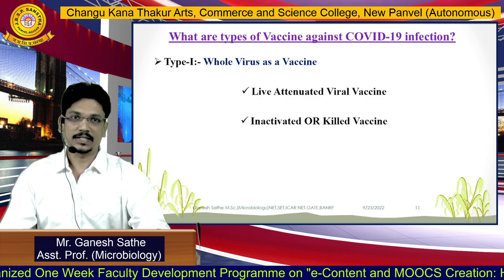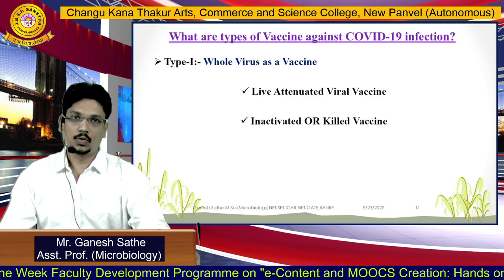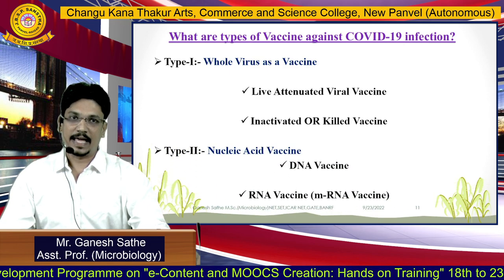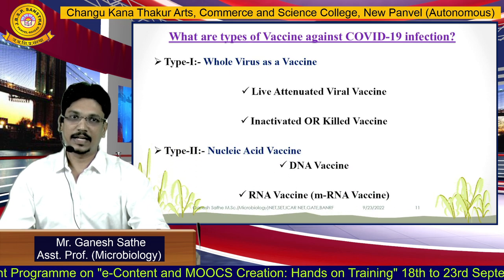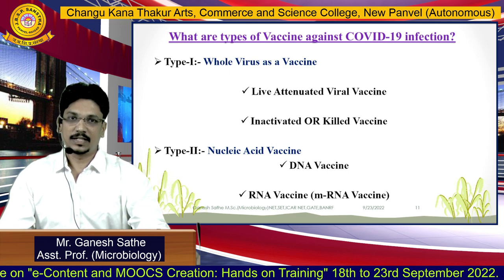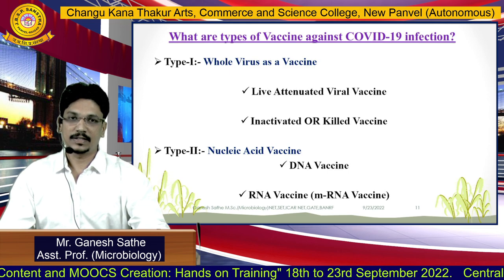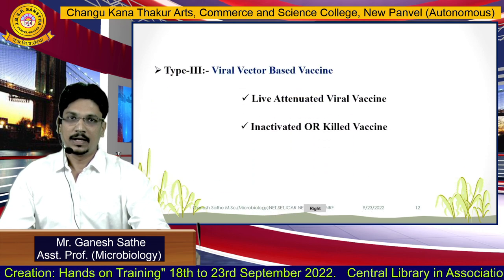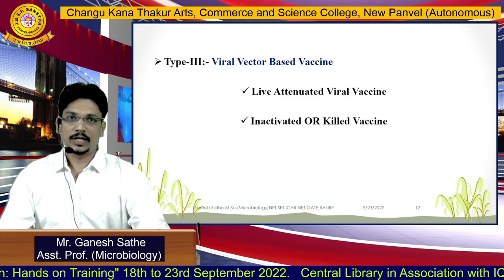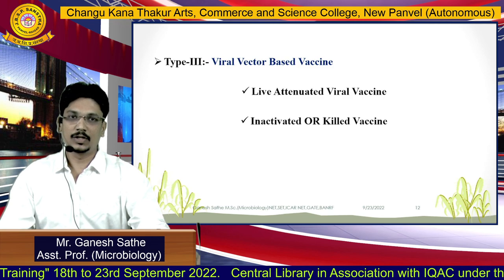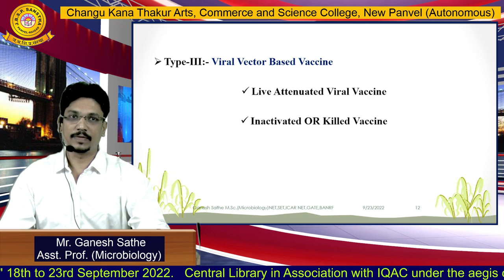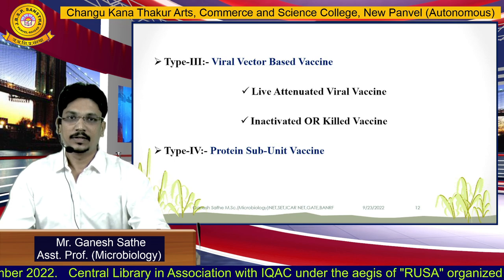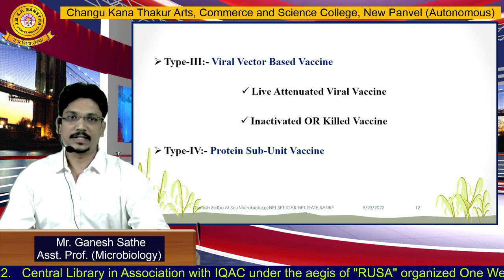The first type is called whole virus vaccine — we can use COVID-19 as a vaccine. They have two subtypes: live attenuated viral vaccine and inactivated or killed vaccine. The second type is nucleic acid vaccine, which also has two types: DNA vaccine and RNA vaccine. Type three is viral vector based vaccine, which also has two types. Type four is called protein vaccine or subunit vaccine.